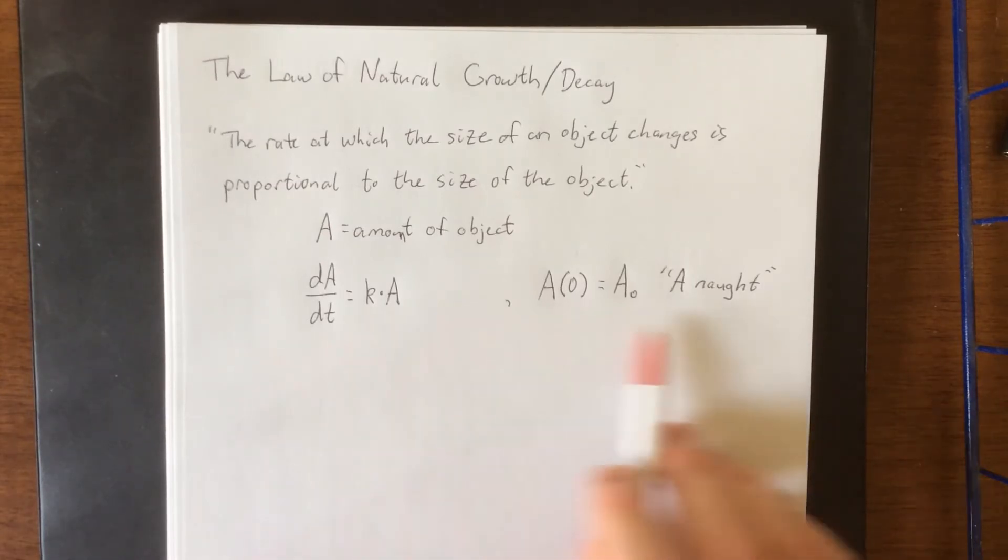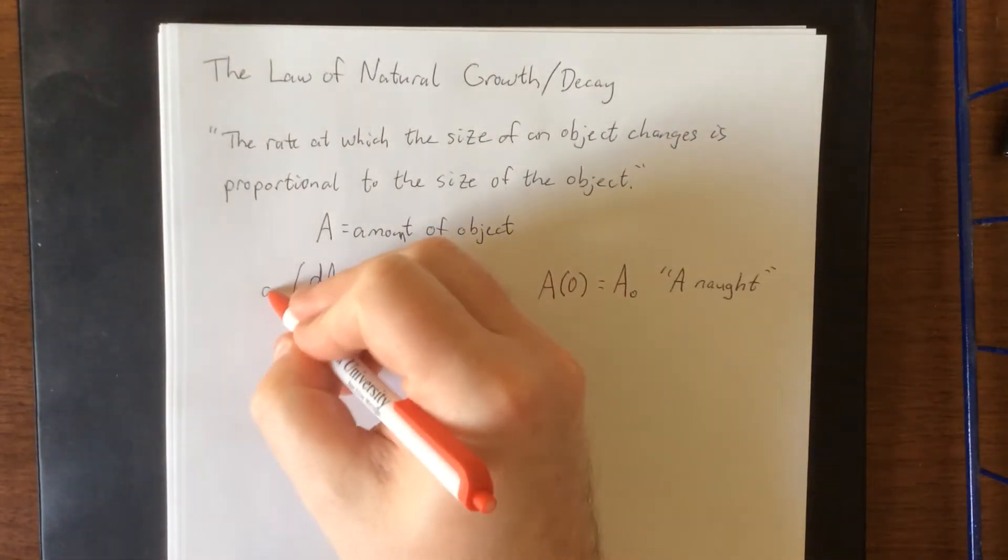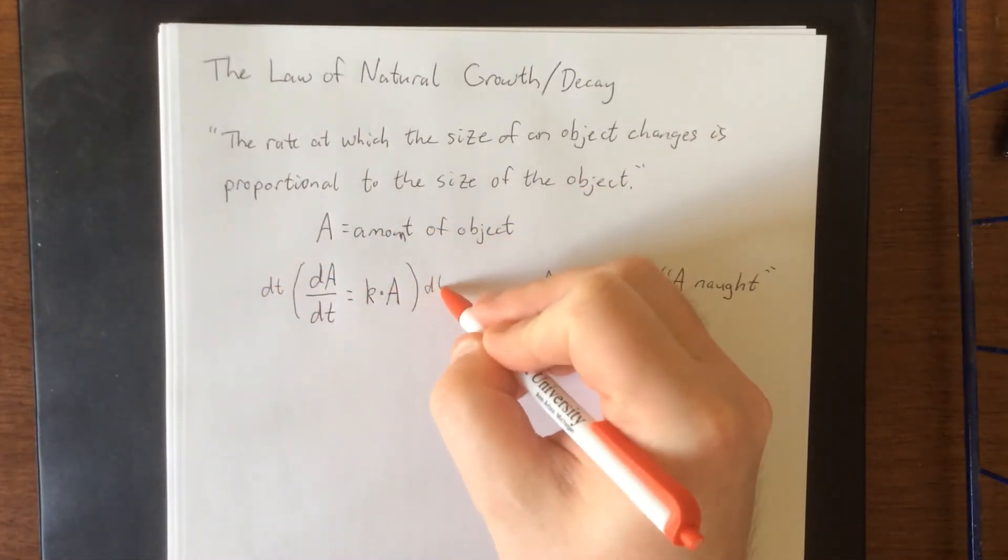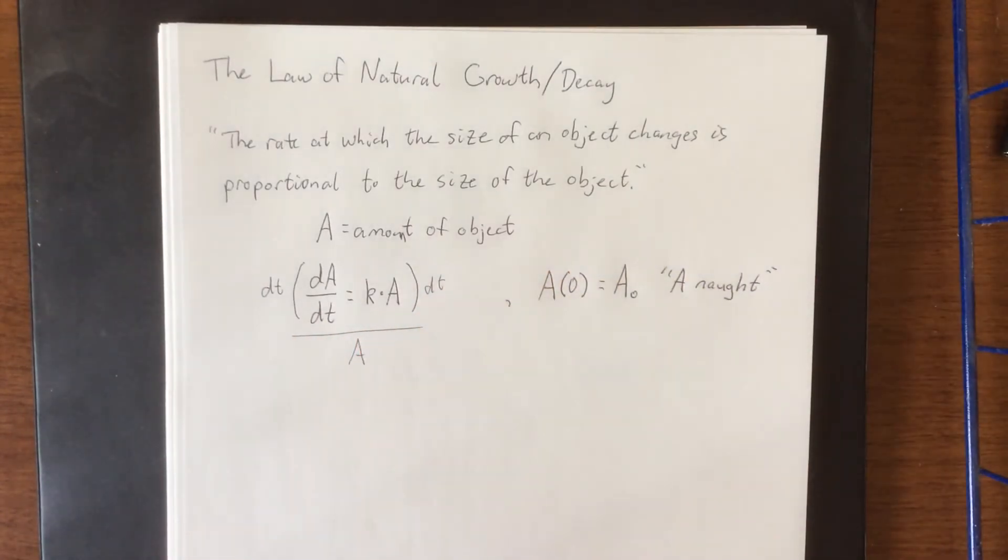With those things in mind we're going to solve this initial value problem. The first thing we're going to do is separate our variables by multiplying both sides by our differential dt, as well as dividing both sides by A.